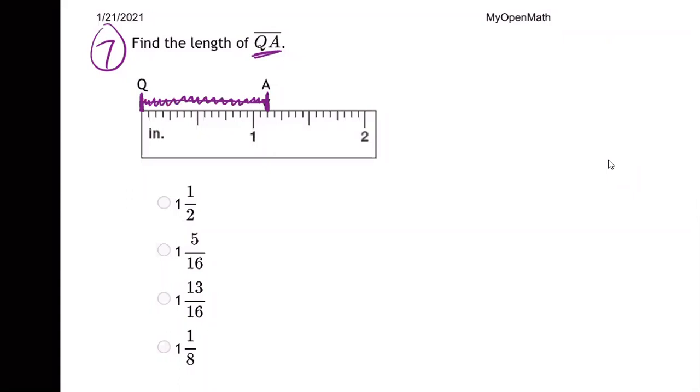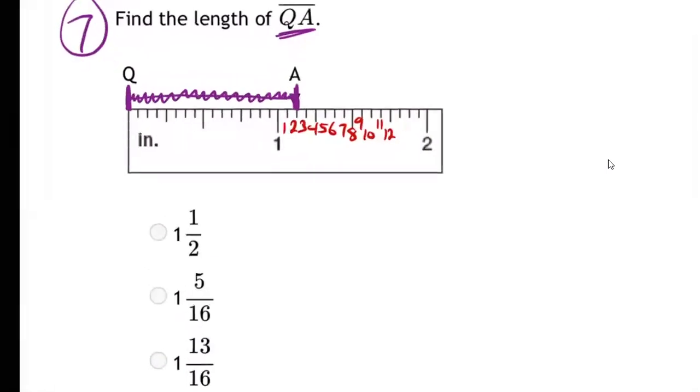See how it's one, two more little marks past an inch? Well, how much are those? Let's see how many of them there are. Three, four, five, six, seven, eight, nine, ten, eleven, twelve. Make this a little bigger so I can write better.